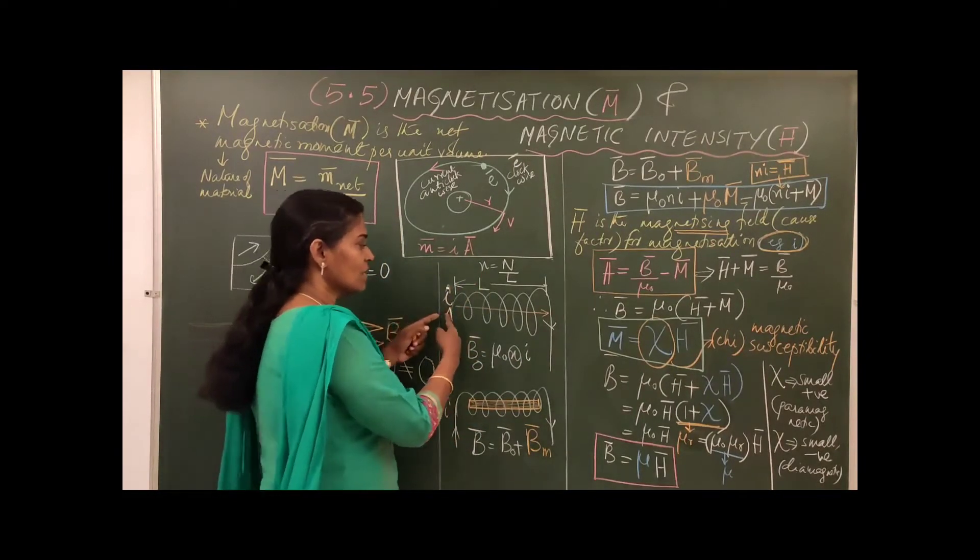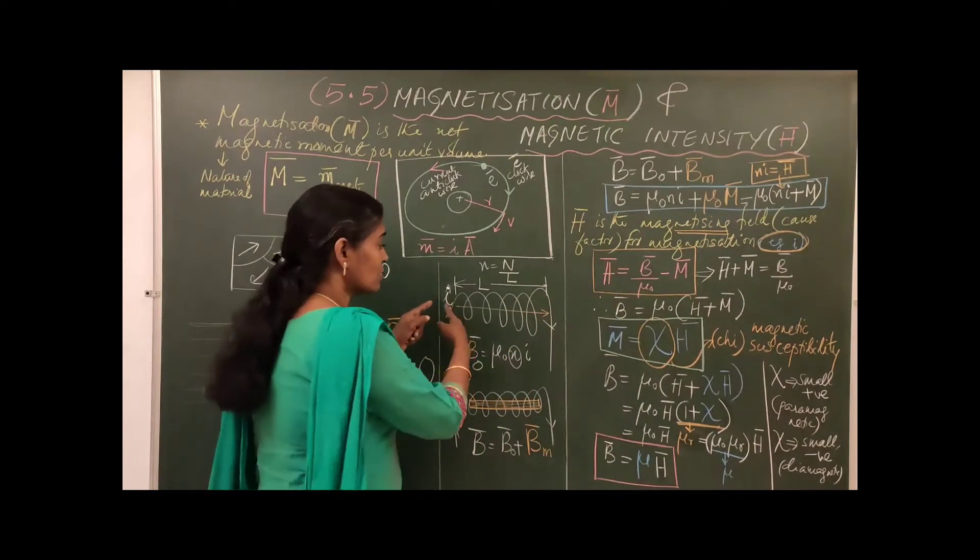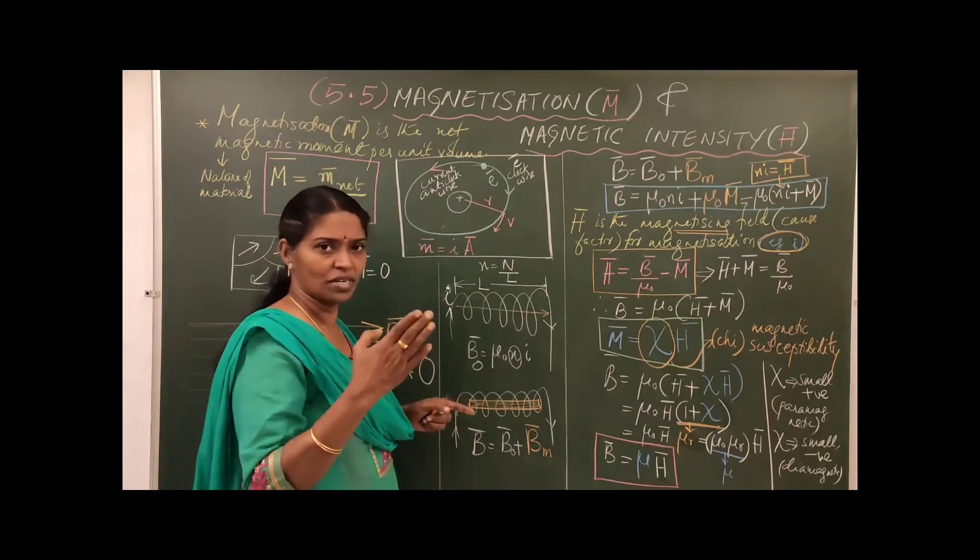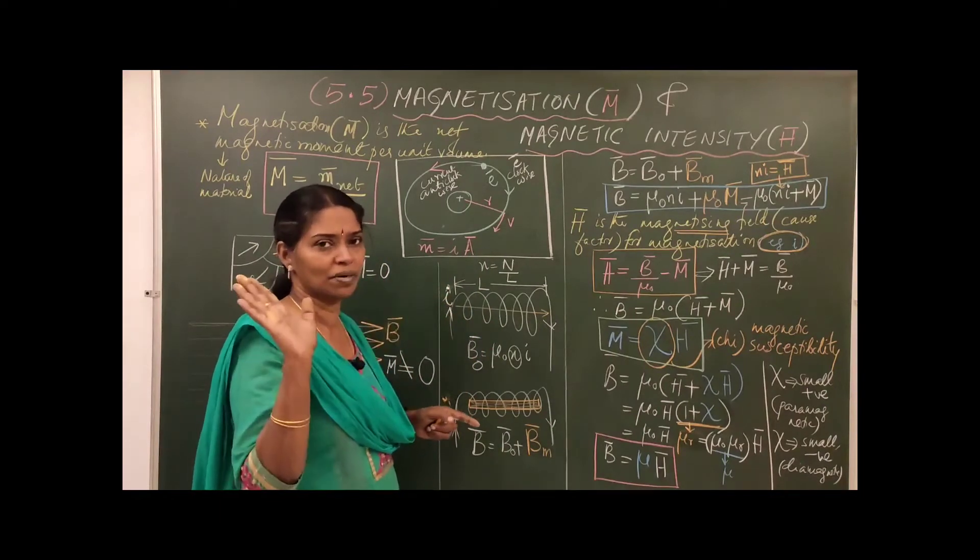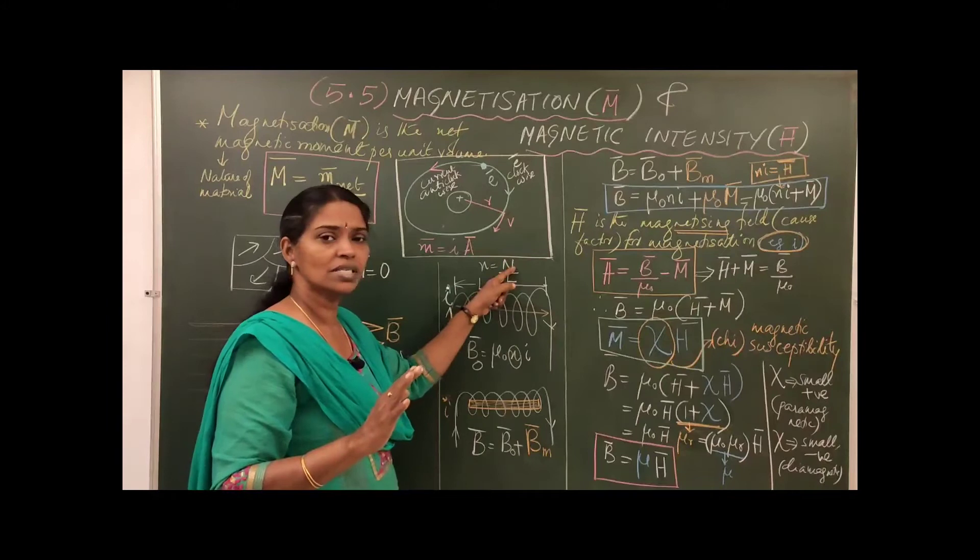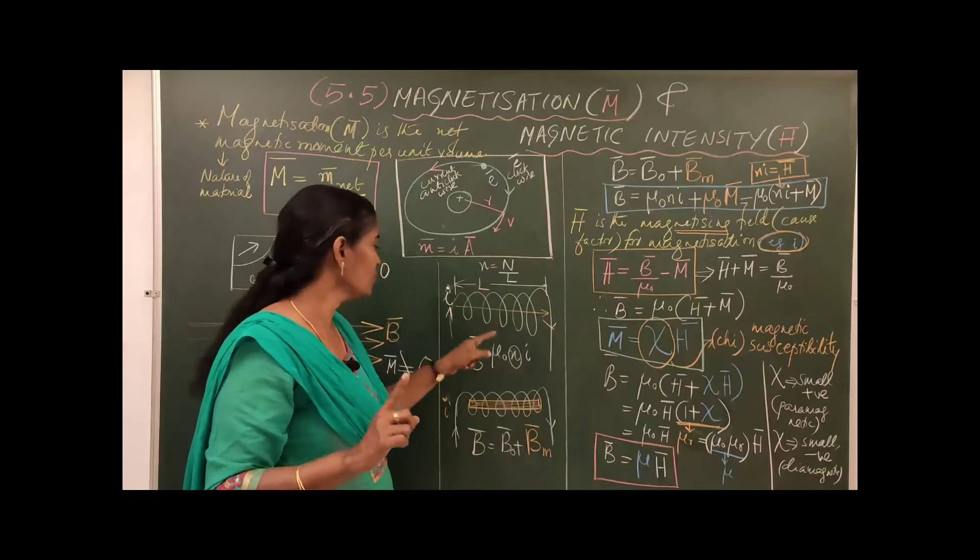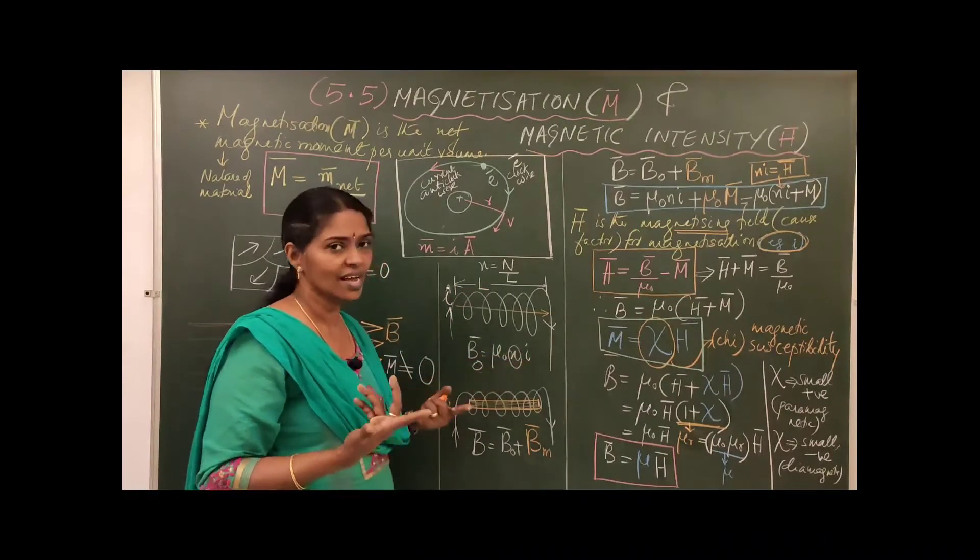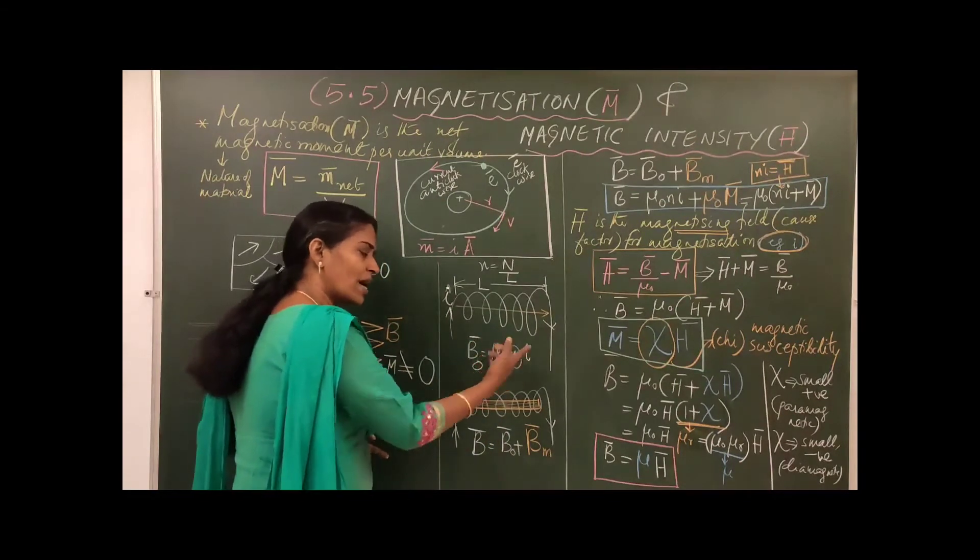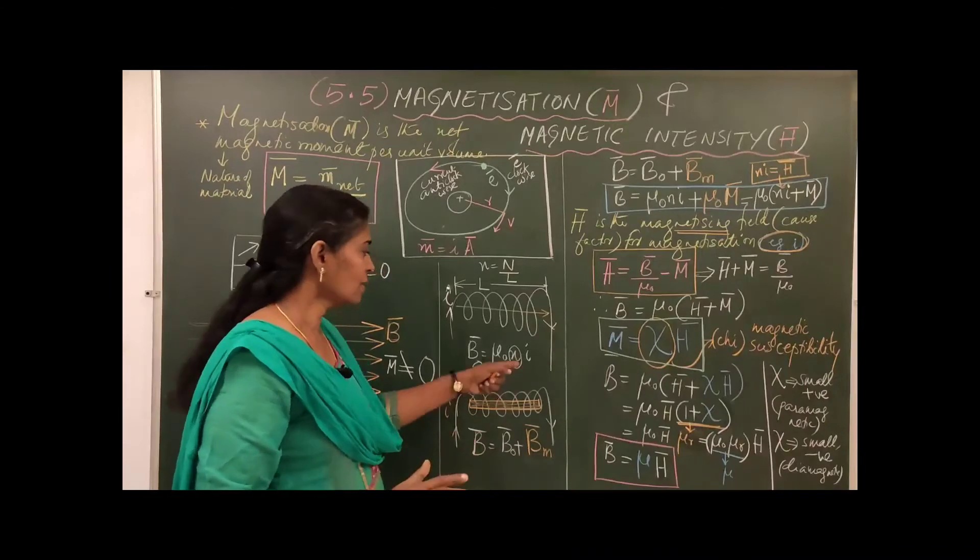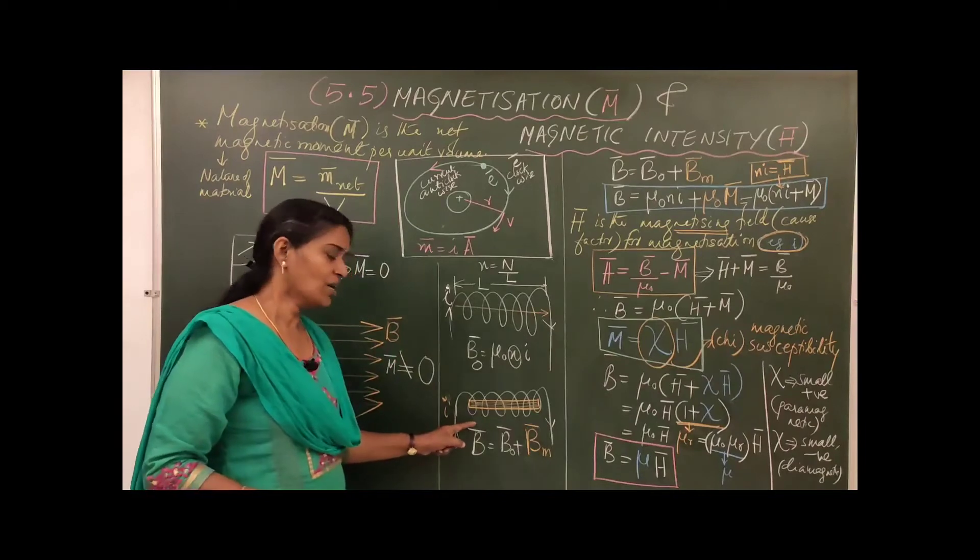What is N? If you have, suppose, ten turns and the solenoid of length ten centimeters or meters, whatever it is, you will have ten upon ten. It is a number, simply a number. So what is N? Number of turns divided by total length. That ratio is N. It is a number, into I. Mu zero is again a constant. So very clear, B zero bar is proportional to I itself. And also N is a factor, provided N is a constant.